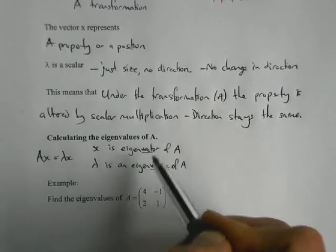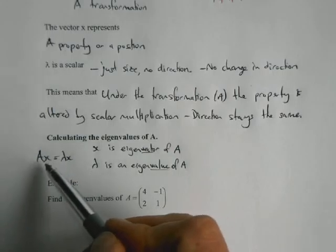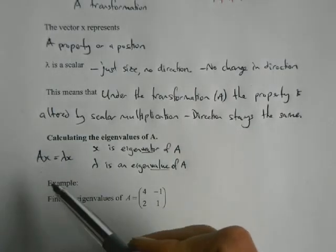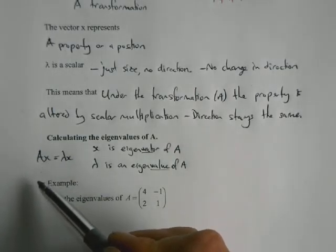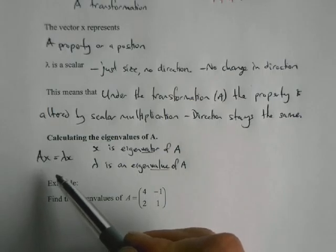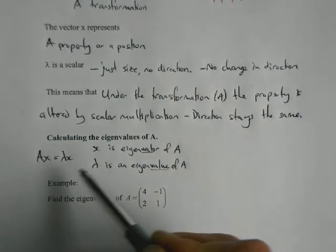So A, the transformation, is the thing that you start with, and then you ask yourself which points under that transformation are only changed in a linear manner, and by how much is that linear change occurring.